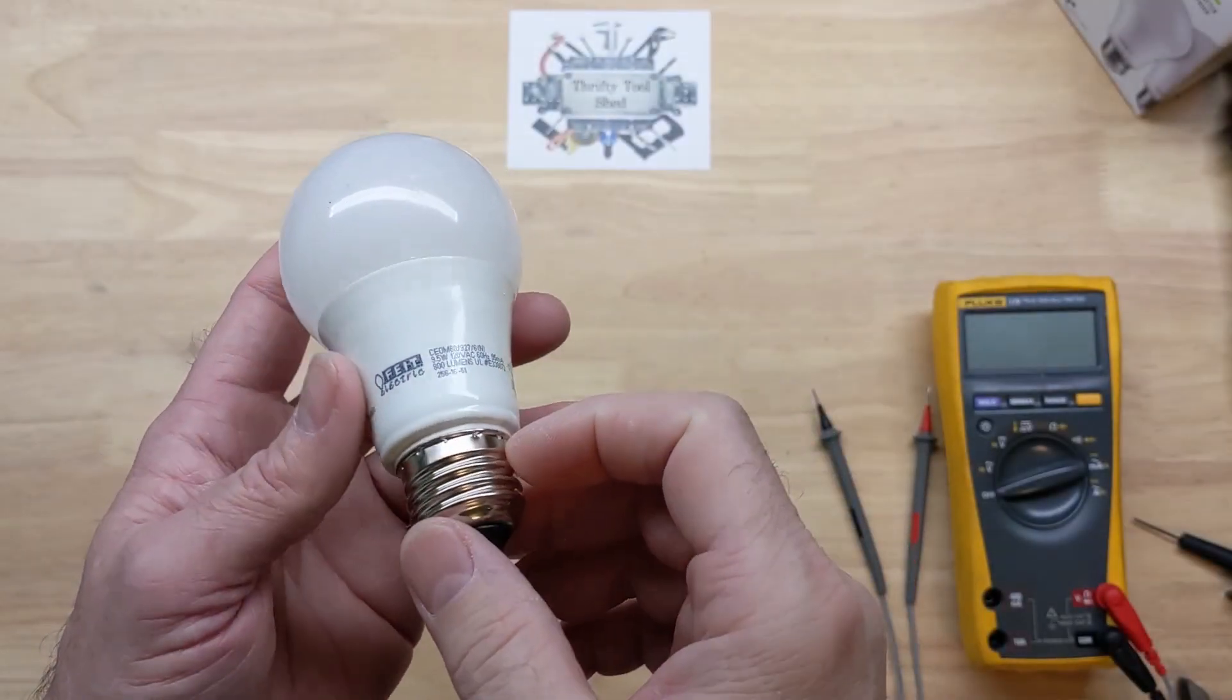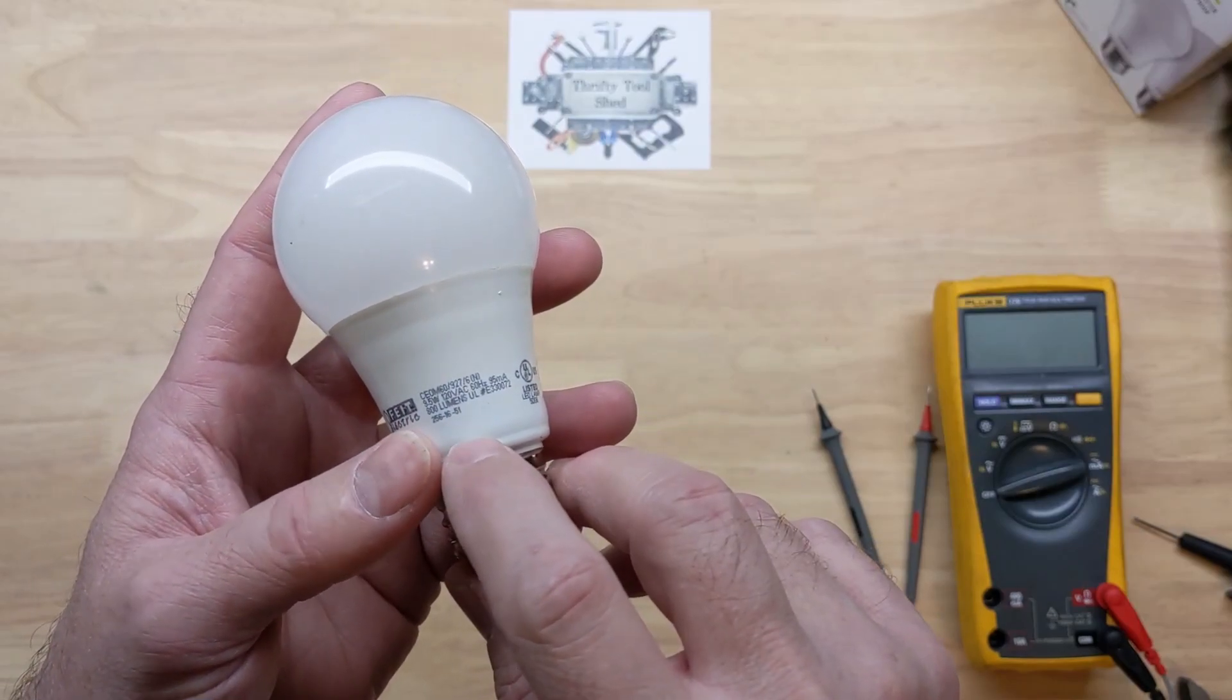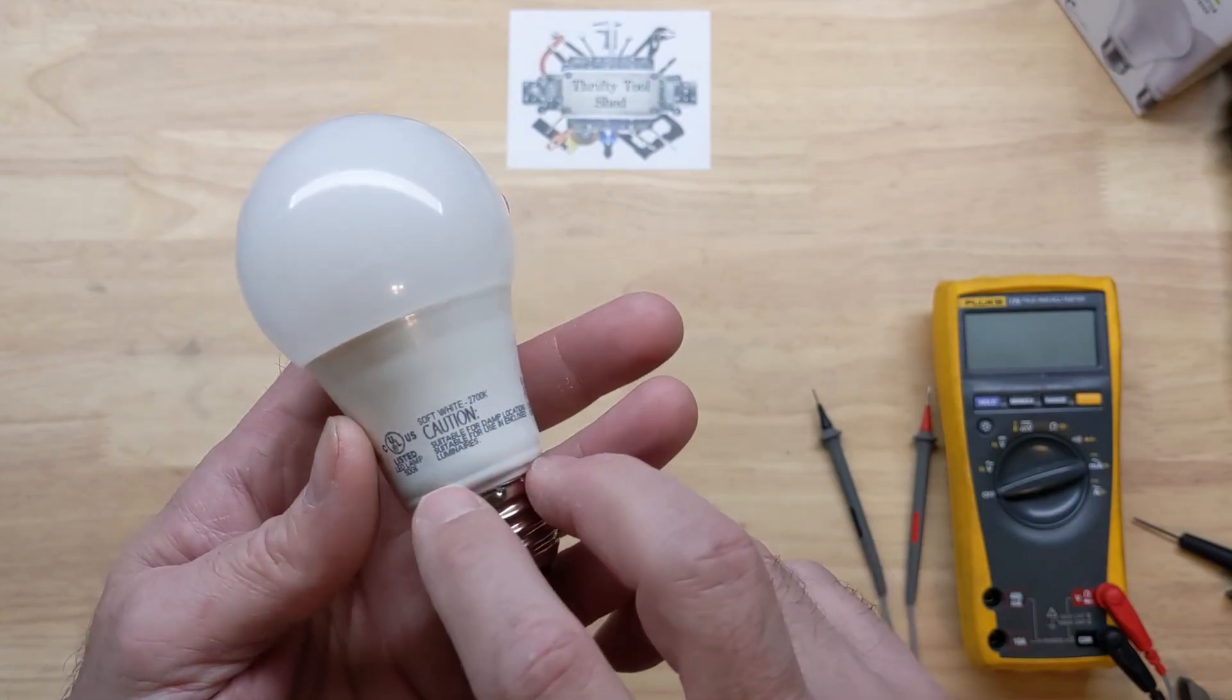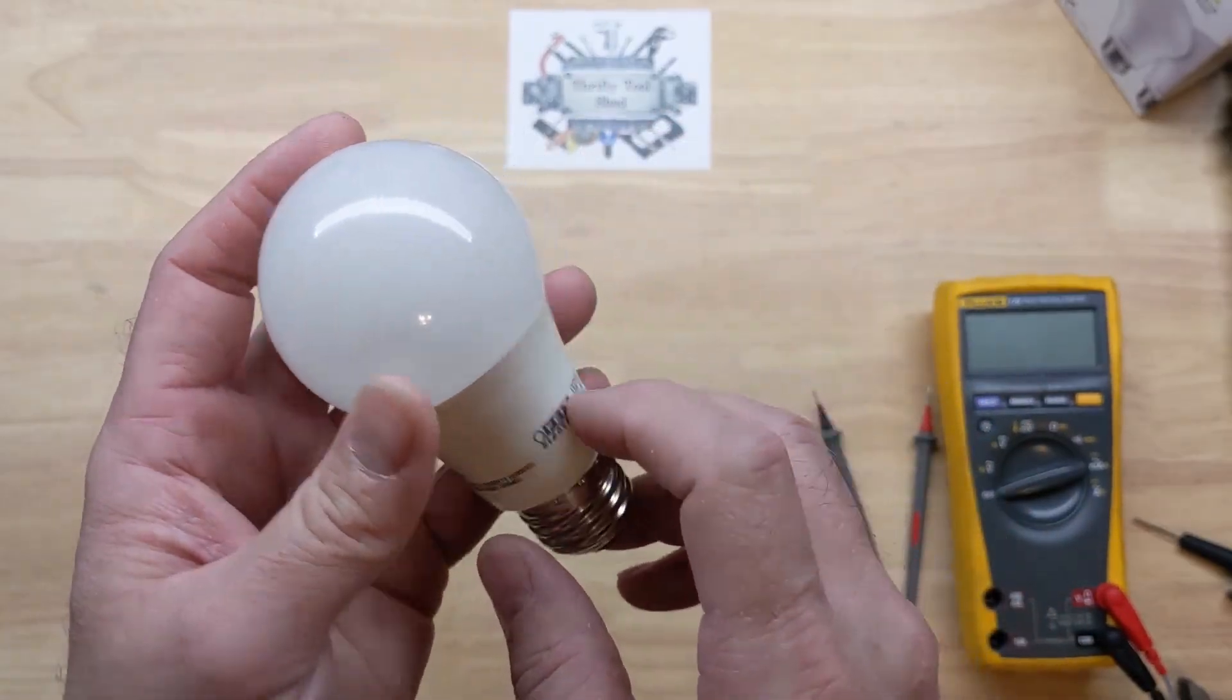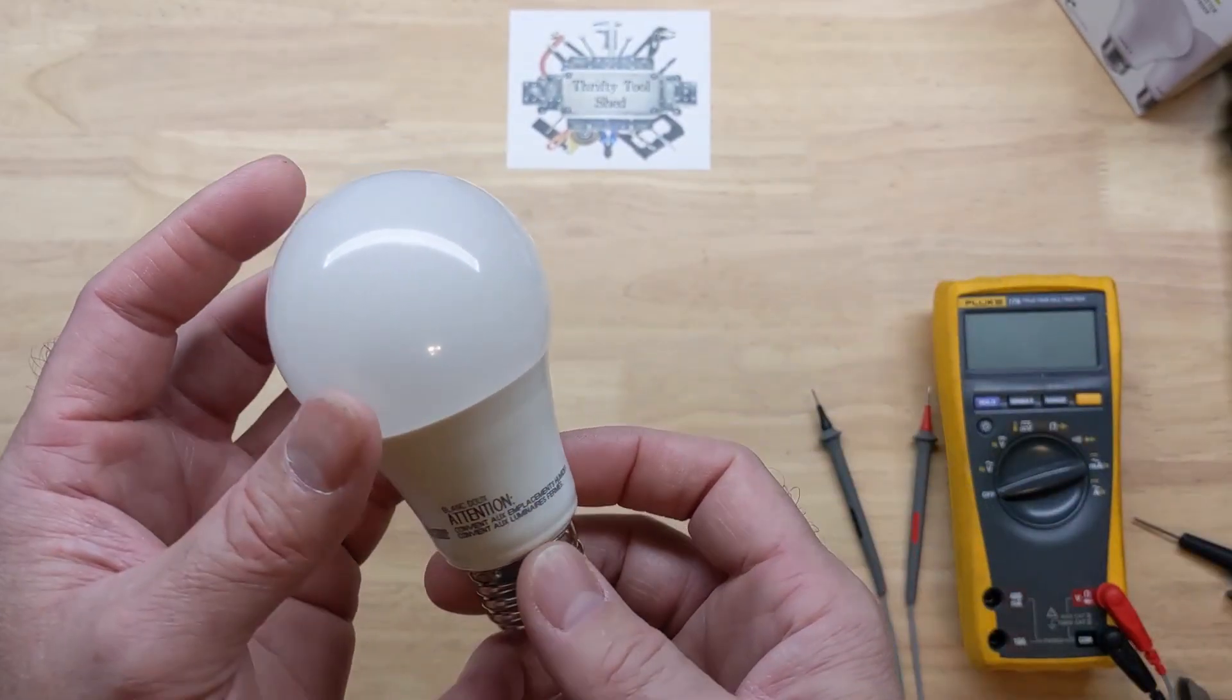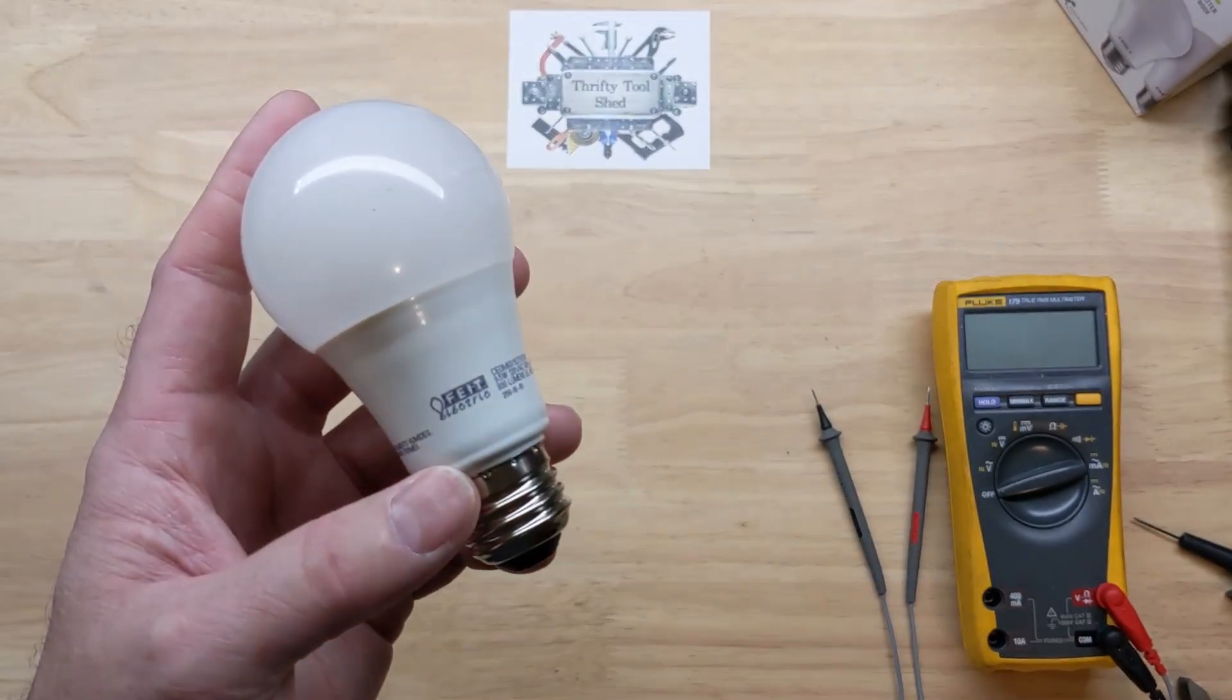Welcome back to the bench. Today we'll take a look at this Fiat Electric 9.5 watt LED bulb - 800 lumens, 95 milliamps, soft white 2700K color temperature. The story behind this light bulb is that it just wouldn't come on from time to time. It was right above my sink vanity and finally wouldn't come on at all. I thought it'd be interesting to see what's going on with it and why it failed.